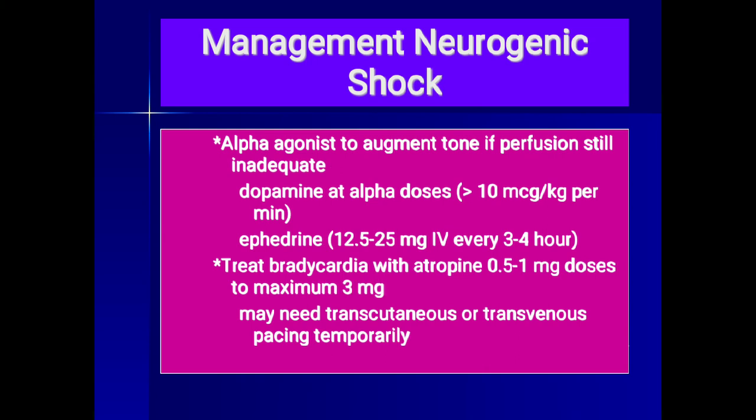Management of neurogenic shock includes alpha agonists to augment tone if perfusion is still inadequate. Dopamine at alpha doses (more than 10 mcg/kg/min), ephedrine 12.5–25 mg IV every four hours, atropine for bradycardia to a maximum of 3 mg, and transcutaneous or transvenous pacing may be needed temporarily.